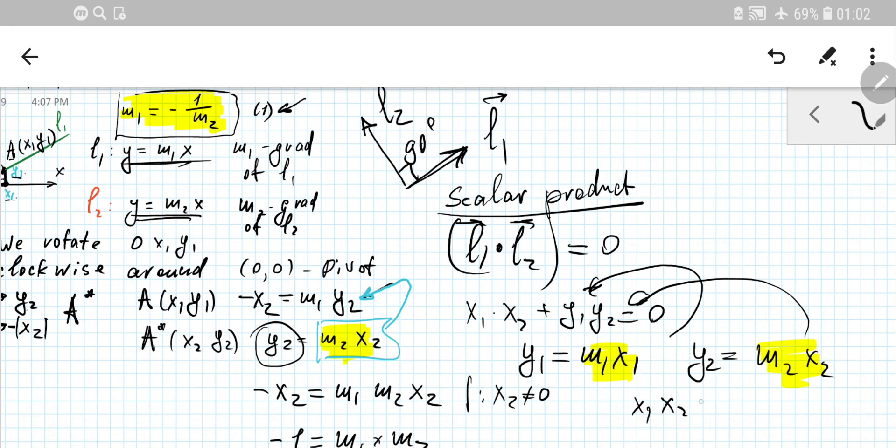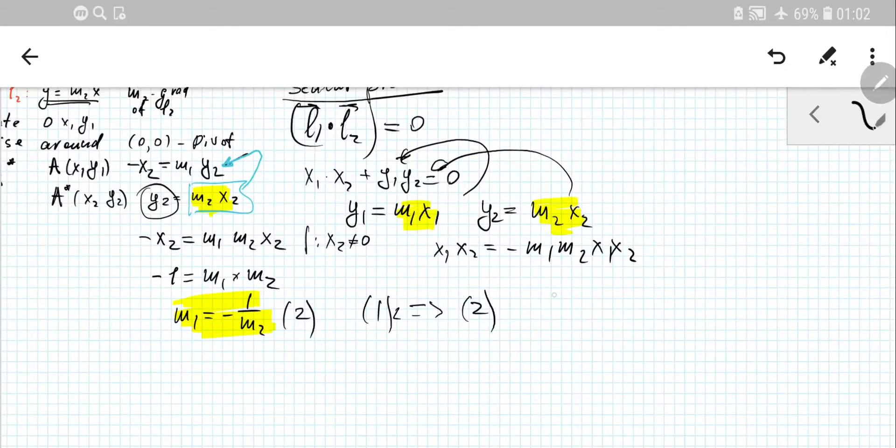Now, we'll use the equation of the line. y equals m1x and y equals m2x. So y1 is simply m1x1 and y2 is simply m2x2. If we plug those values for y's back to our original equation, we'll have x1x2 minus m1m2x1x2 equals zero. We can divide by x1x2, having that each of them not equal to zero, and we arrive to 1 equals negative m1m2, from where we can express m1 as negative 1 over m2.